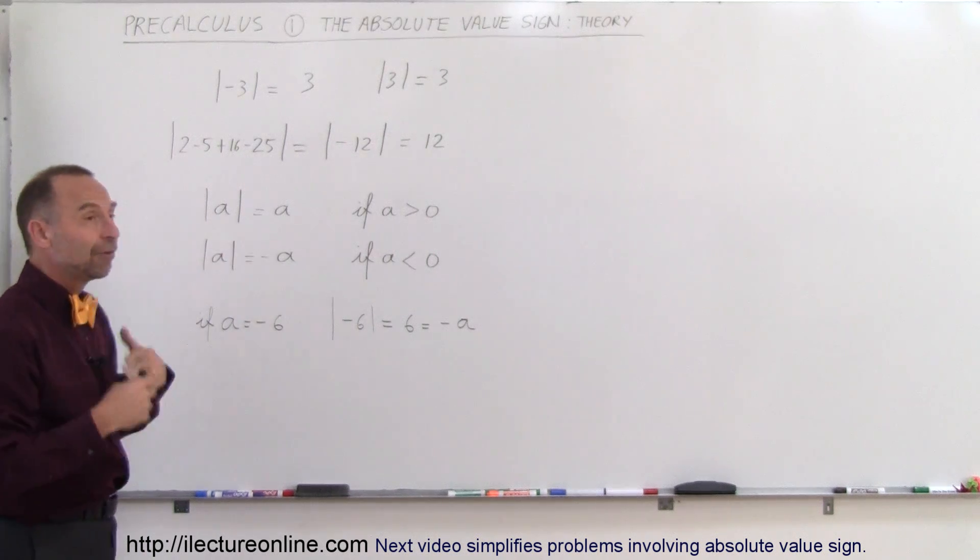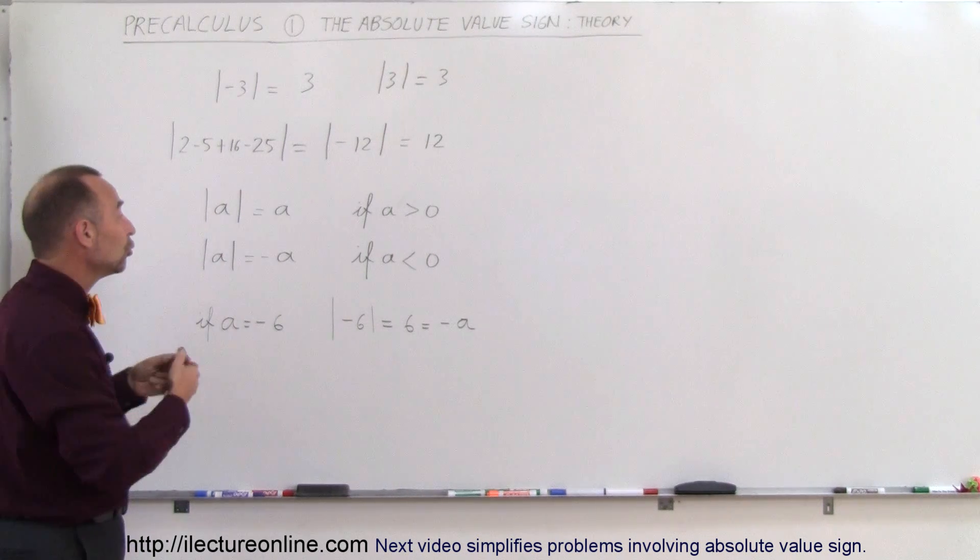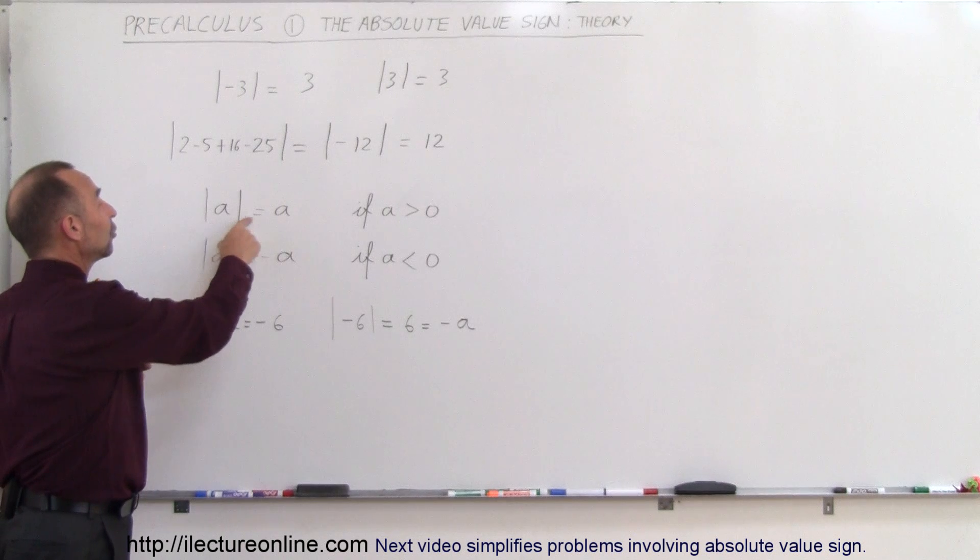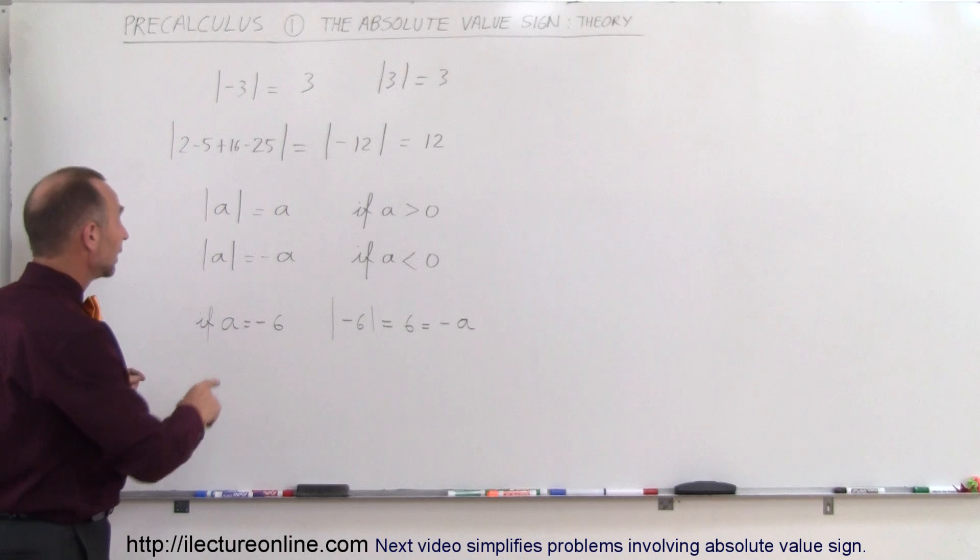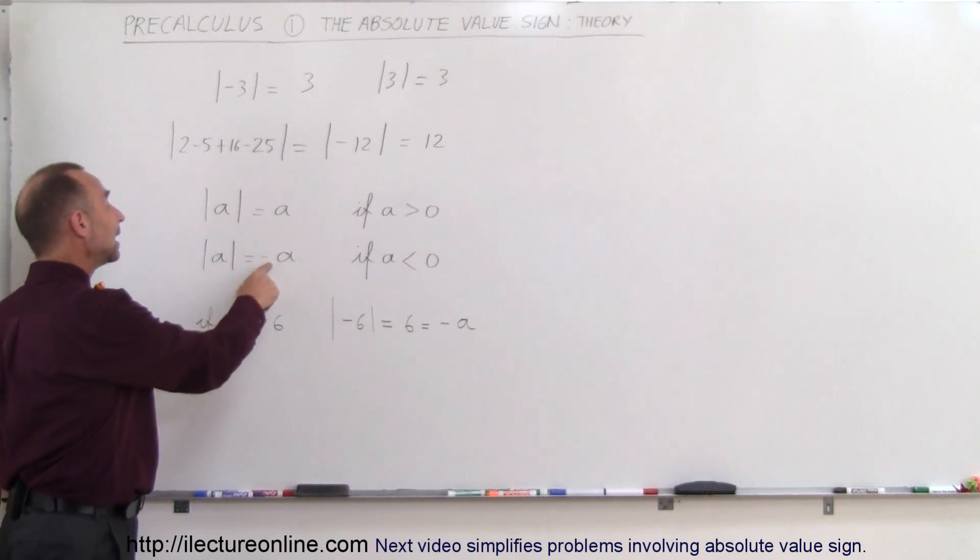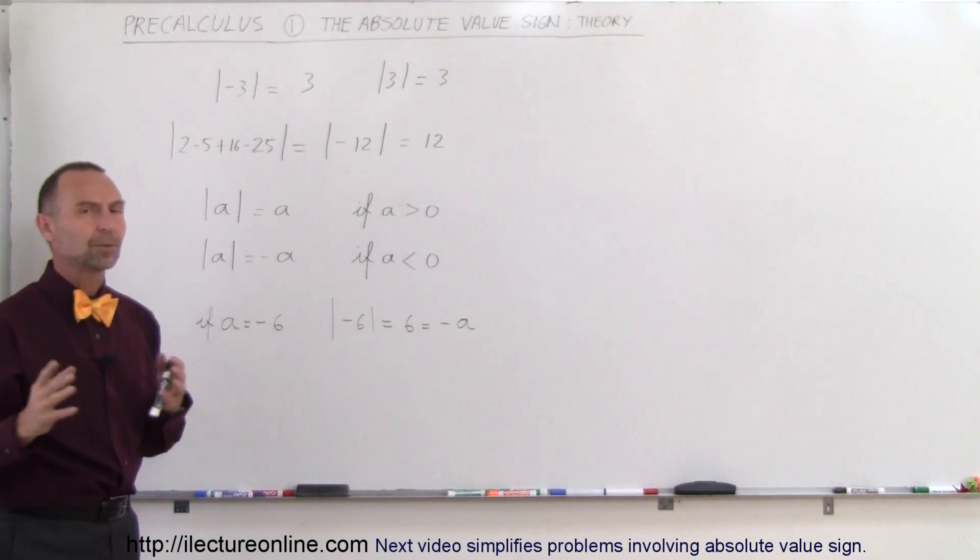The absolute value of a variable or a constant that you don't know what it may be is going to be equal to a if that constant is greater than zero to begin with. But the absolute value of a will be negative a if a was a negative number to begin with.